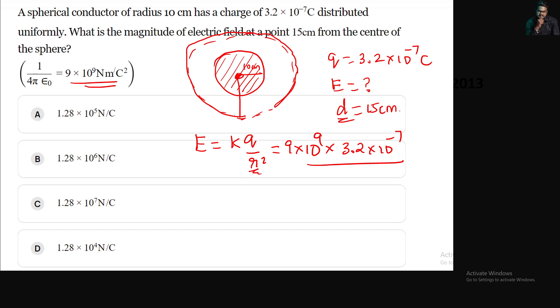Distance is 15 centimeters, which is 15 × 10^-2 meters. R² is 15 × 10^-2 × 15 × 10^-2. We get 10^-3. We can write these numbers and simplify.